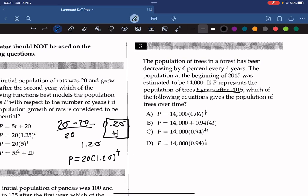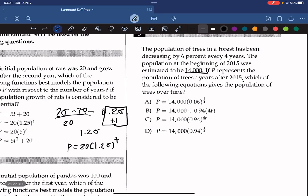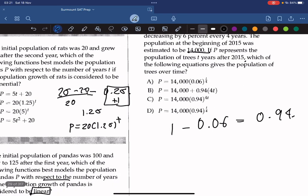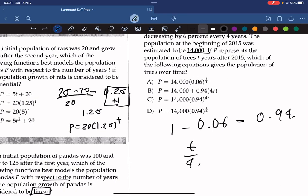Alright, let's move on to question 3. The population of trees in a forest has been decreasing by 6% every 4 years. The population at the beginning of 2015 was estimated to be 14,000. If P represents the population of trees T years after 2015, which of the following equations give the population of the trees over time? We can calculate this by calculating the exponential decay rate, which is 1 minus 6%, so it's 0.06, and this will give us 0.94. And since the decrease only happens once every 4 years, the rate that should be applied is T over 4, so the correct answer must be D.